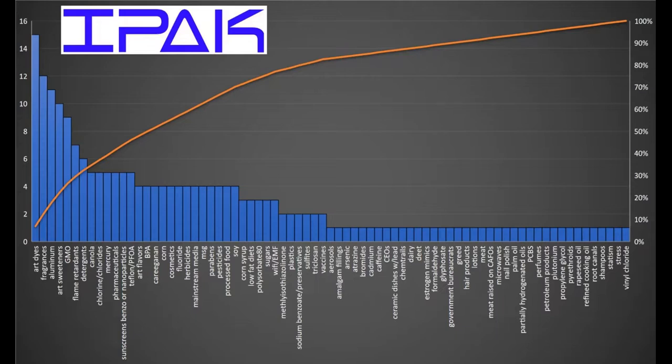Last year, when I was thinking about putting this course together, I did some informal market research with a Facebook poll asking which specific toxins people are concerned about. Ranking by responses: number one was artificial dyes in foods, number two were fragrances, number three was aluminum — which may reflect bias from my own research. Then came artificial sweeteners, genetically modified organisms, detergents, canola presumably because of glyphosate, chlorine and chlorides, mercury, pharmaceuticals, sunscreens, Teflon, artificial flavors, BPA, cosmetics, fluoride, herbicides, and MSG, parabens, and pesticides rounding out the list.